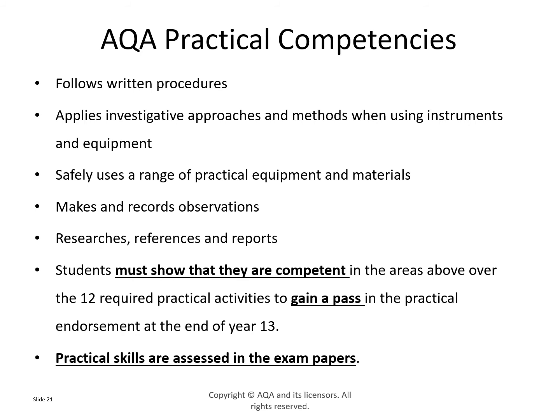AQA practical competencies — otherwise known as the Common Practical Assessment Criteria — use the same assessment criteria as physics and chemistry. They have been written by employers in the science sector and further education establishments as a guide to the skills they would like their employees and candidates to have. They are roughly split into five areas: following written procedures, applying investigative approaches safely, using a range of practical equipment, making and recording observations, and researching, referencing and reporting. Over the course of two years you need to show you are consistently competent in all those areas, and if you can do that, you will gain a pass in your practical endorsement at the end of Year 13.